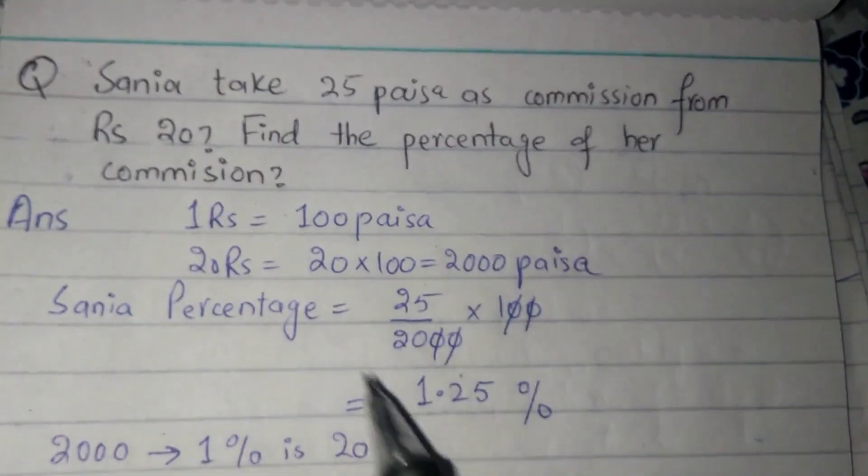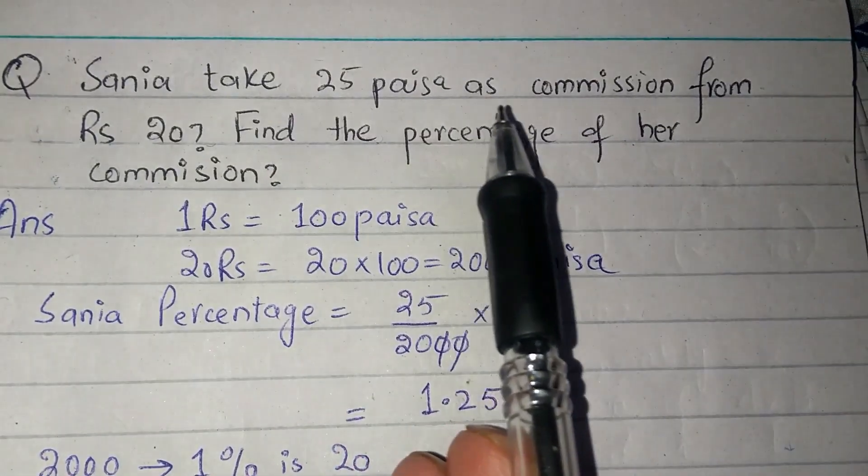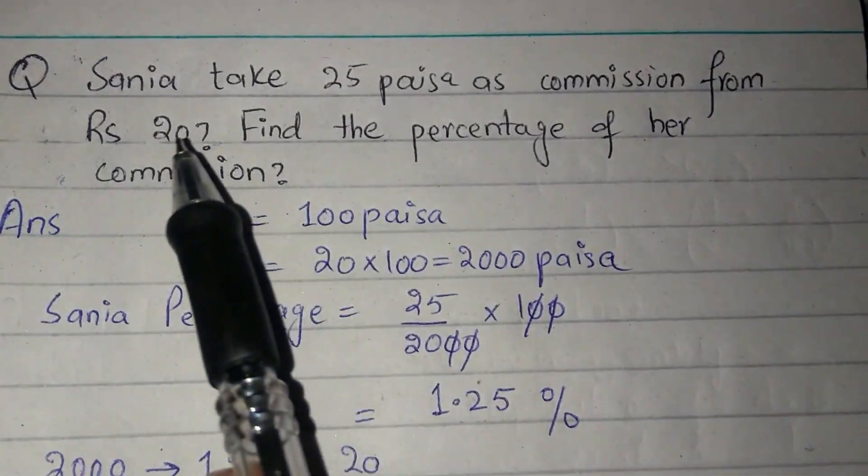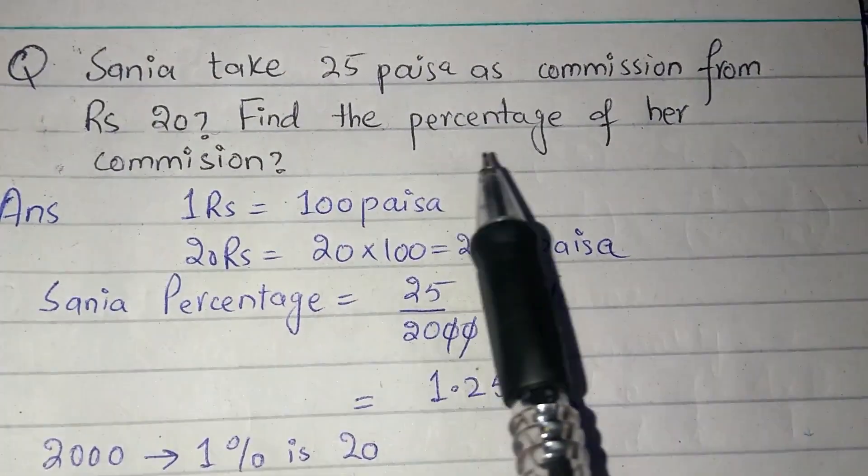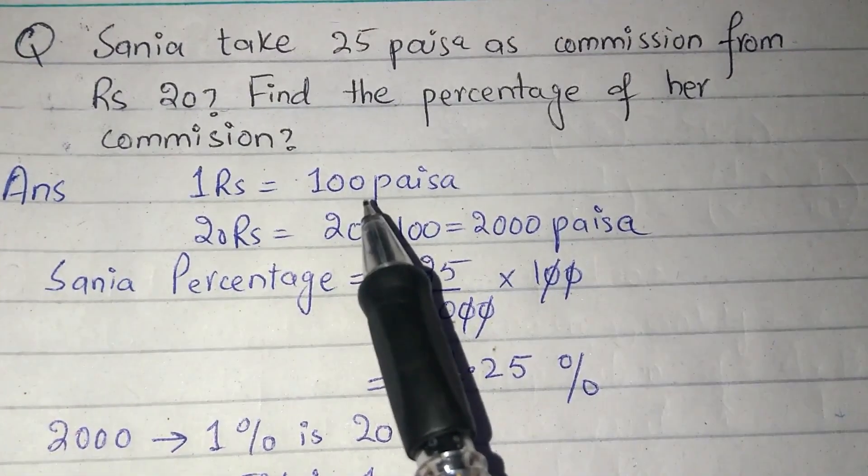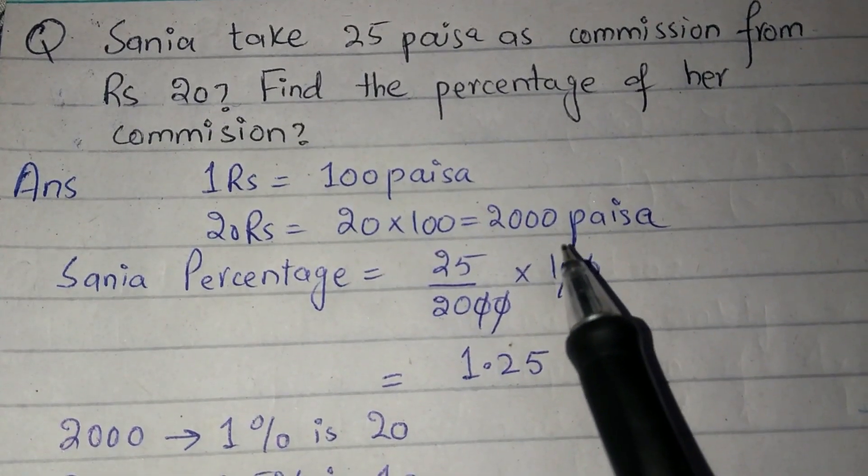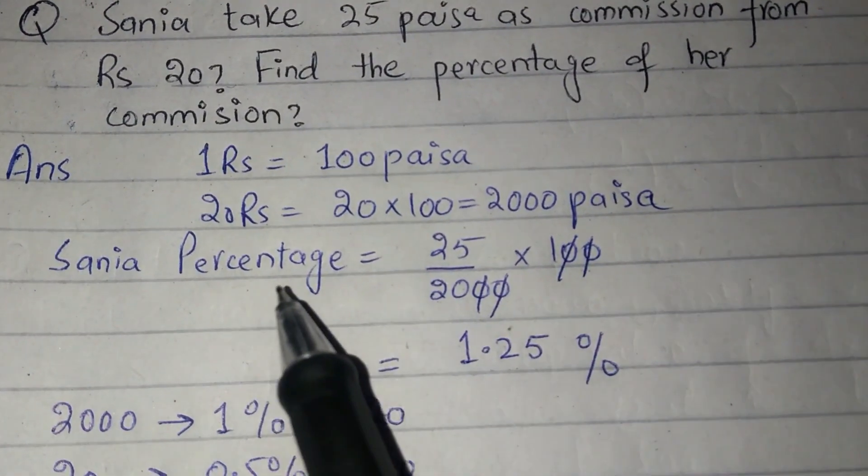Next question, Sania takes 25 paisa as commission from Rs 80. Find the percentage of her commission. 1 rupee has 100 paisa, 20 rupees will have 2000 paisa.